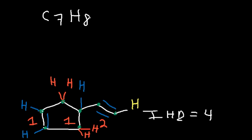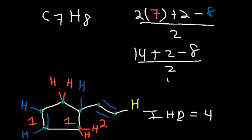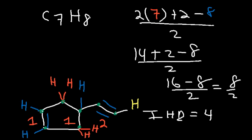Using the formula: (2n + 2 − H) / 2 = (2×7 + 2 − 8) / 2. 2 times 7 is 14, plus 2 is 16, minus 8 is 8, divided by 2 is equal to 4. So you have two ways of calculating the IHD value, and both confirm IHD = 4.